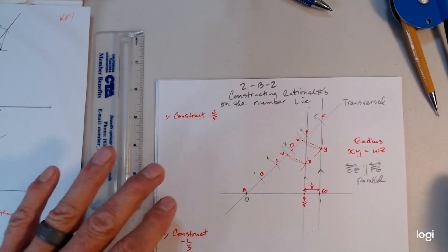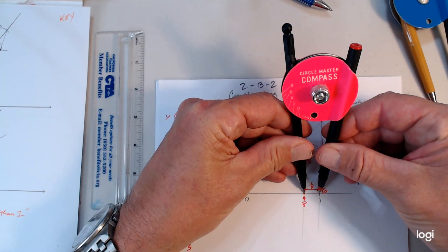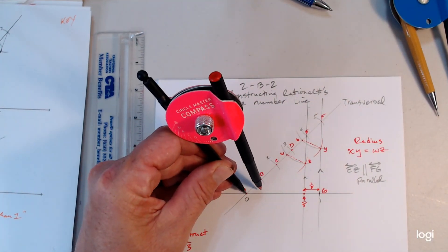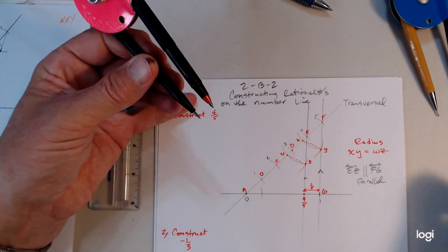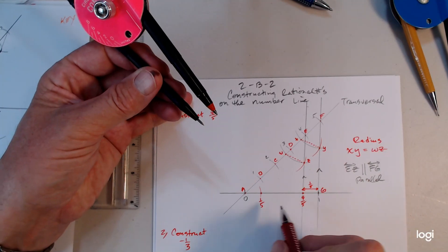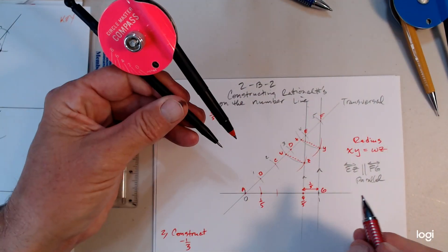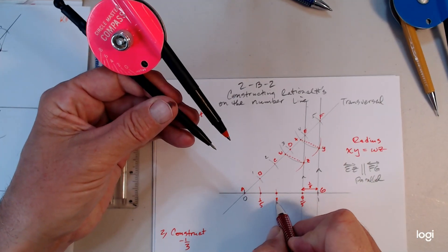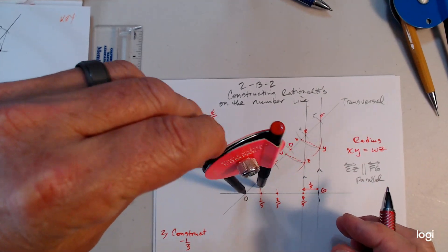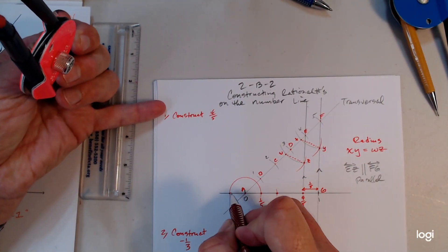So you can get creative. You can adjust your compass from point to point, and that's one-fifth. Come over here at A to find one-fifth — right here there's one-fifth because it's the same distance. If I want to find two-fifths, I just found two-fifths right here. If I want to find negative one-fifth, I just go on the other side of the number line.